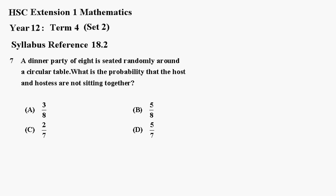Number 7. A dinner party of 8 is seated randomly around a circular table. What is the probability that the host and hostess are not sitting together?